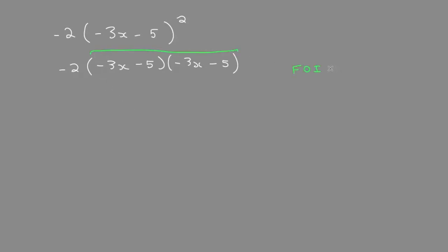FOIL stands for first, outside, inside, last. It's the order in which we multiply the terms in the parentheses.